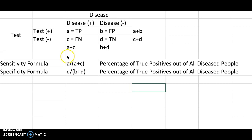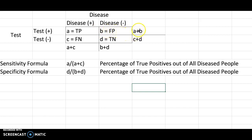What we have on the board right here is a two by two table. We say that because we have two cells by two cells. Going horizontally across it, you have your test results — testing positive whether or not you have the disease or do not have the disease. That gives us our a plus b, which is all positive tests.